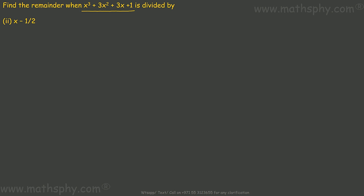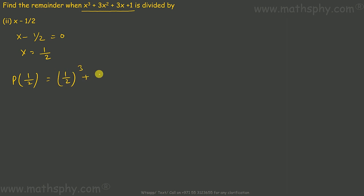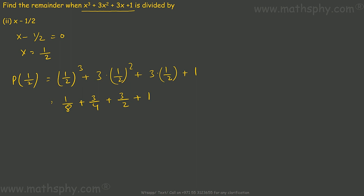For the second divisor, x − 1/2: first find its zero. x − 1/2 = 0 gives x = 1/2. Replace all x's with 1/2: (1/2)³ + 3(1/2)² + 3(1/2) + 1 = 1/8 + 3/4 + 3/2 + 1 = 27/8. So dividing by x − 1/2 leaves a remainder of 27/8.